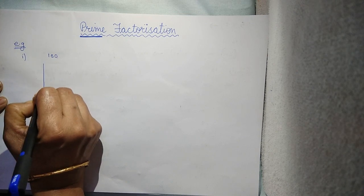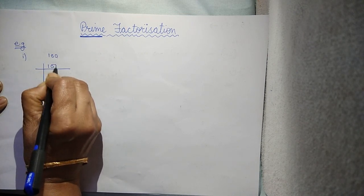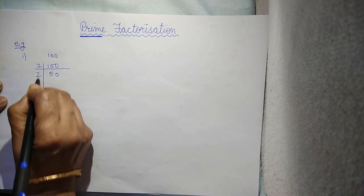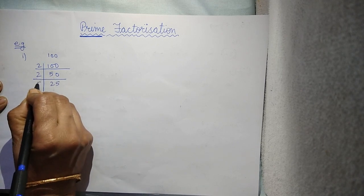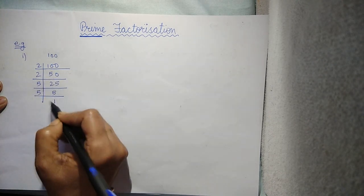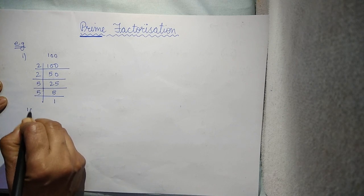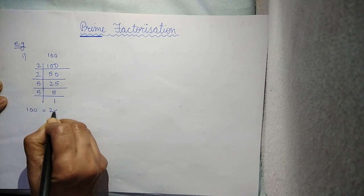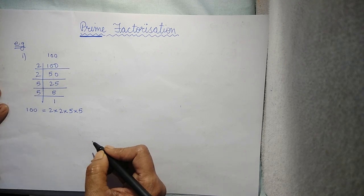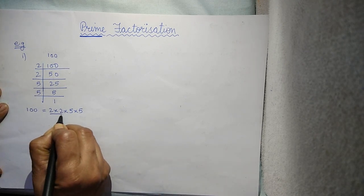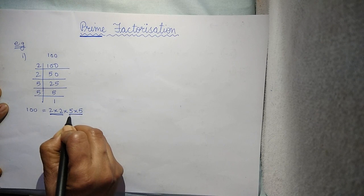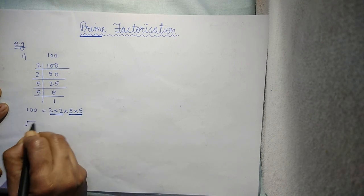Now, find out its prime factors. 100. So, only you have to take the prime factors. 2 into 50, 2 into 25, 5 into 5. This method is known to all of you. Now, write down 100 in the form of 2 into 2 into 5 into 5. To find out the square root by this method, now you have to make the pairs of the same prime number together.